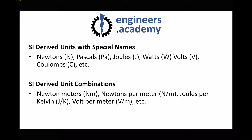Finally, we have SI derived unit combinations. Examples include newton metres — combining the special name newtons with metres — which gives us the SI unit of torque. We also have newtons per metre, joules per kelvin, and so on. For these SI derived units with special names, if you're ever unsure of the SI units, I would recommend looking them up. Over time you'll build your knowledge base, but if you're ever in doubt, just look them up.